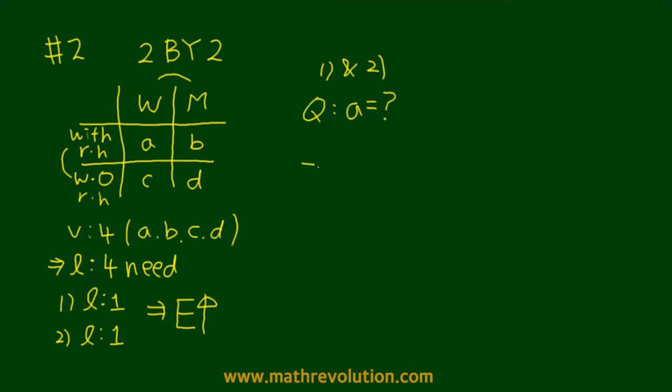Writing condition one as an equation, that's total number of women, A plus C, and then out of that how many are women with red hair, A. That's equal to five percent, which is the same as 0.05.